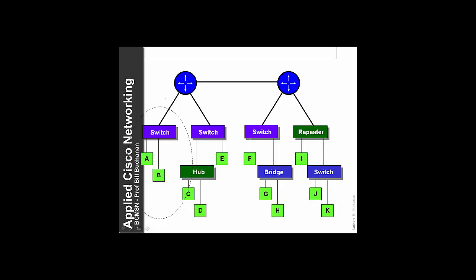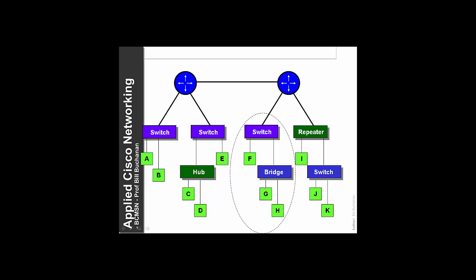If we see here the extent of a broadcast domain, we see nodes A to K. A and B are in the same broadcast domain because the broadcast will be stopped by this port on the router. A hub forwards broadcasts, so it will go to C, it will also go to E, but it will be blocked by this port here. F will go through the switch, the switch will forward on through the bridge to G and also to H, but the broadcast will be stopped here.